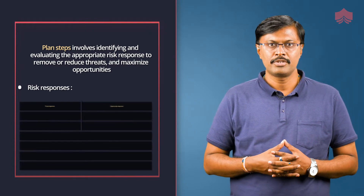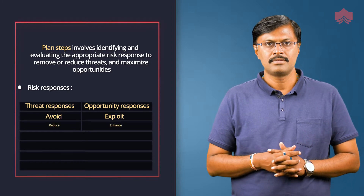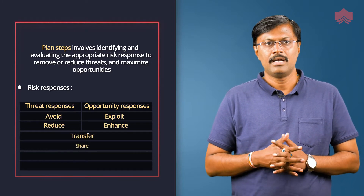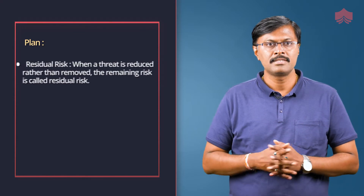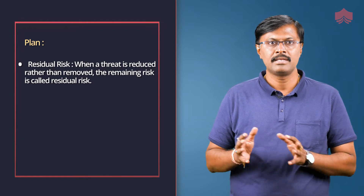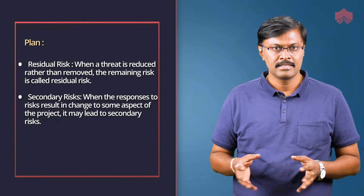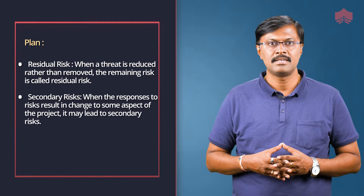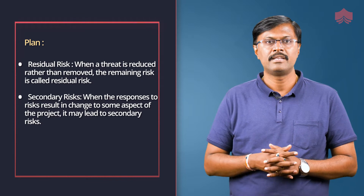Risk responses for opportunity risks are: exploit, enhance, transfer, share, accept, and prepare a contingent plan. Every risk response implemented will have a residual risk. Residual risk is the remaining risk when a threat is reduced rather than removed. Secondary risk occurs when the response to a risk results in a change to some aspect of the project, which may lead to a new secondary risk.